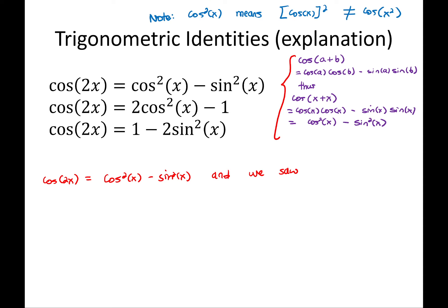cos of a plus b formula and we saw in a previous video, previous part of this note, that sine squared x plus cos squared of x equals 1. So I'm going to use this fact. First, I'm going to rearrange for cos squared of x. Cos squared of x is then equal to 1 minus sine squared of x. Just rearrange it. I'm going to sub that in.